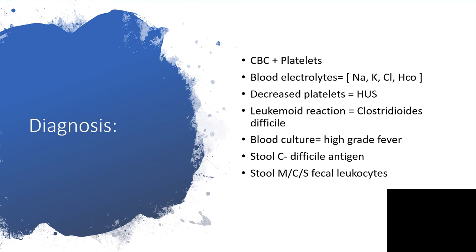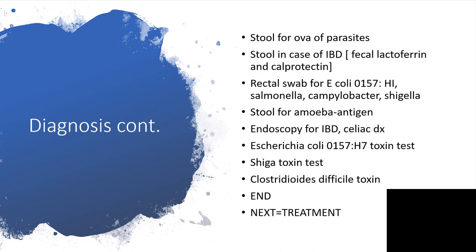C. difficile antigen testing is secondary to the use of antibiotics. You can have stool MCS — that's microscopy, culture and sensitivity — with fecal leukocytes. You can have stool for ova and parasites. And in cases of inflammatory bowel disease, stool for fecal lactoferrin and calprotectin. You can have a rectal swab for E. coli, particularly if there's suspected Shiga toxin-producing E. coli O157 or H7. Also do swabs for Salmonella, Campylobacter, or Shigella. You can have stool for amoeba antigen or endoscopy for inflammatory bowel disease or celiac disease.